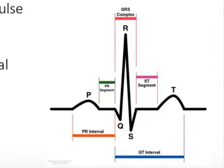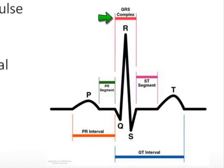When we look at the basic EKG rhythm, we will be discussing the P wave, which is the depolarization of the atrium; the PR interval, which represents the signal passing from the atrium to the ventricle down the conduction system; and the QRS complex, which is the depolarization of the ventricle.